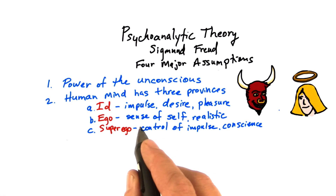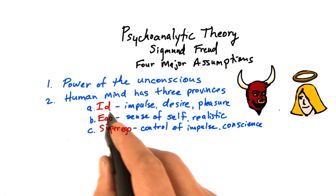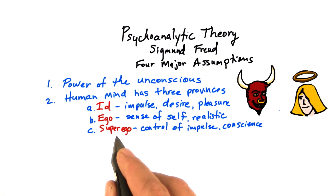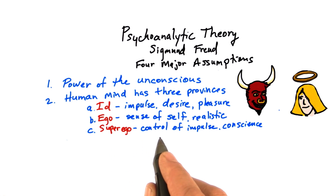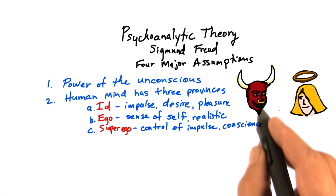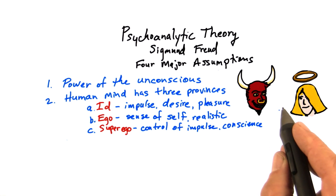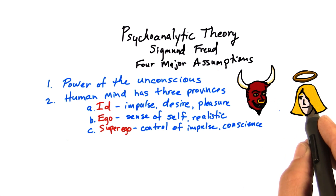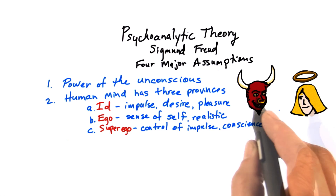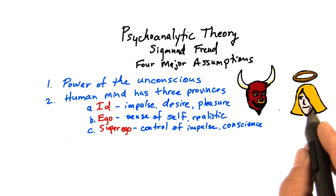What makes these three provinces so interesting is the inherent conflict between the id on the one hand and the superego on the other — between impulse, wanting something, and controlling that impulse. We can depict this as a fight between our angel side and our devil side: the devil tells us to do it, we want it, and the angel says no.